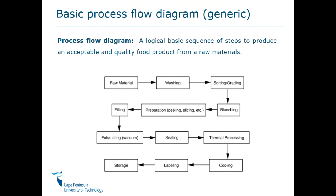The first question we must answer is: what is a process flow diagram? A process flow diagram is a logical basic sequence of steps to produce an acceptable and high quality food product from raw materials. We start with the raw material and then we must have a finished product; in between there is processing that takes place. Food science and technology deals with the conversion of raw materials through processing into final high-nutritious, high-quality, safe food products.